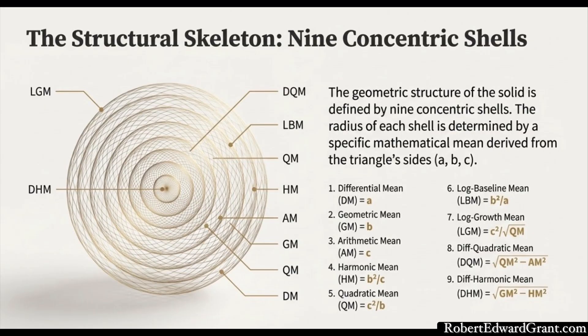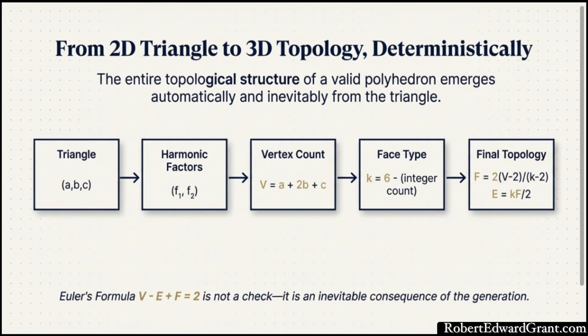Let's move to the core mechanism, Stage 1. How do you get the size of the shape, the vertex count V? If this system is truly deterministic, the triangle has to tell us exactly how many corners the final shape will have. And the formula they give is V equals A plus 2 times B plus C. That doubling of the middle leg B, that geometric mean, seems to be the critical insight. Why not just add them up, A plus B plus C?